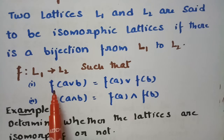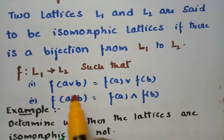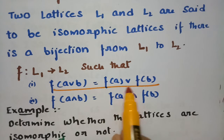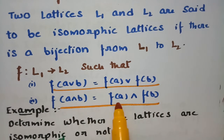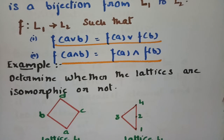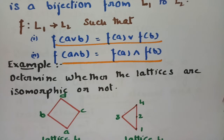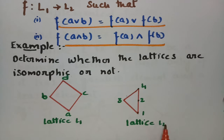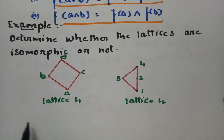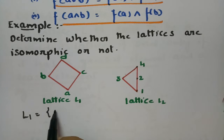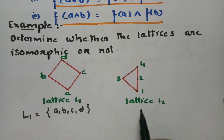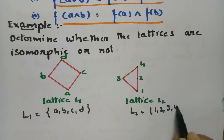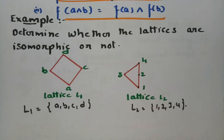Example: determine whether the lattices L1 = {A, B, C, D} and L2 = {1, 2, 3, 4} are isomorphic. We need to find a bijection F: L1 → L2. It is clear from the Hasse diagrams that F is one-to-one and there is a bijection between the two lattices.